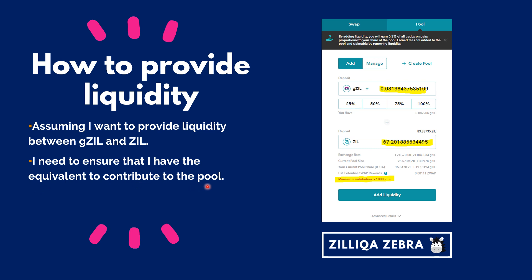Now, assuming I would like to provide liquidity between GZill and Zill, I will need to ensure that I have the equivalent amount to contribute to the pool. Using this example, assuming that I have this amount of GZill, I will need to ensure that I have the corresponding amount of Zill based on the current exchange rate shown here. In this case, I do not have enough Zill to contribute, so an error message appears. When that happens, I could either lower the GZill amount or deposit more Zill into my ZillPay wallet. Either way is actually possible, and when resolved, I can just click on this button to add that to the liquidity.